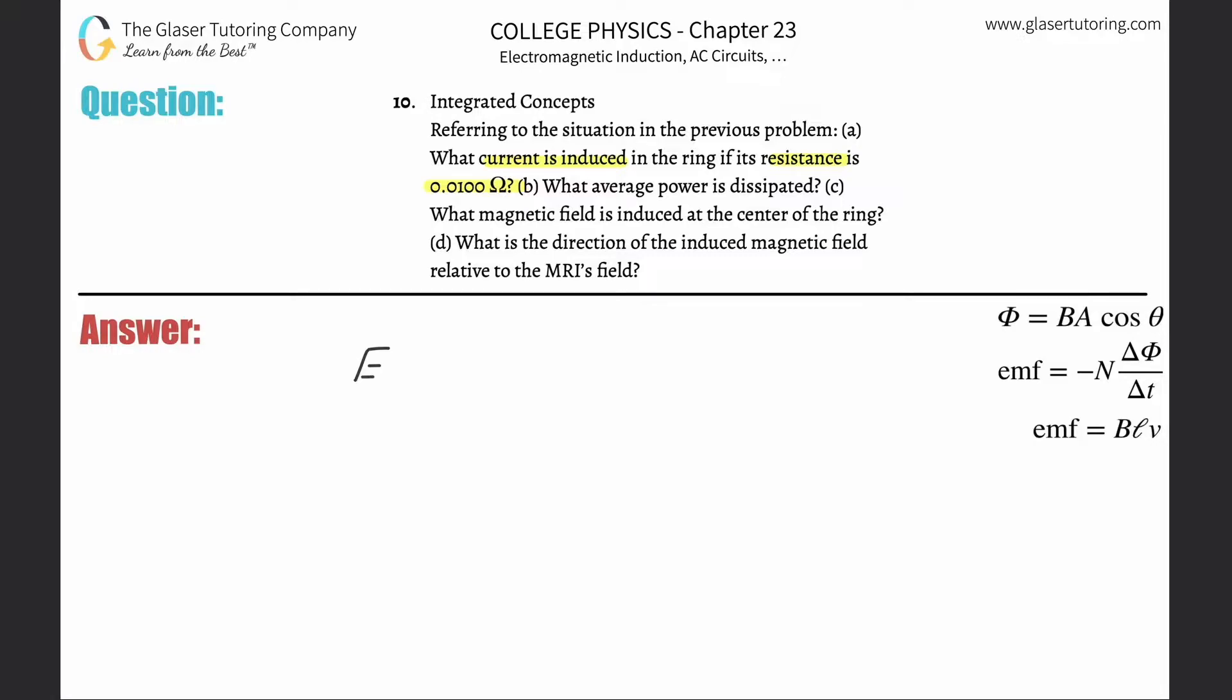So we calculated that the EMF in that problem, the induced EMF, was negative, but we're only concerned about the magnitude. The negative just tells us direction. We're concerned about the magnitude, which is 3.04 times 10 to the minus 3 volts. That's the EMF that was induced.